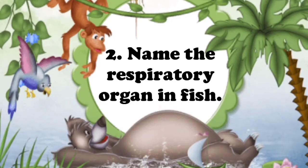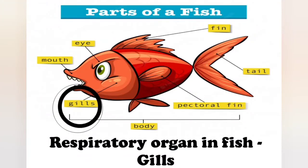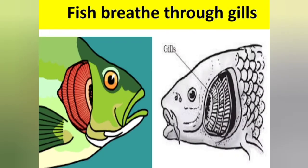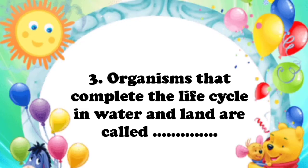Second question: name the respiratory organ in fish. Which is the respiratory organ in fish? Yes, gills. Gills are the respiratory organ of fish. Let's move to the next question.